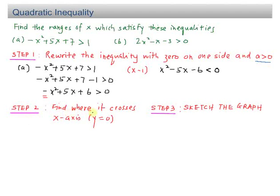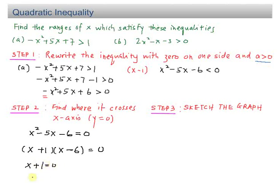Step 2: find where the expression crosses the x-axis. Set x squared minus 5x minus 6 equal to 0 and factorize. In past exam questions you can always factorize it. We get (x + 1)(x − 6) = 0, so x equals negative 1 or x equals positive 6. Step 2 is complete — we have the points where the graph crosses the x-axis.